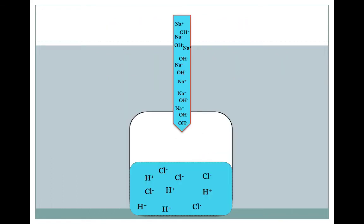Let's look at this on a particle level. Here again we have NaOH in our burette, so Na⁺ ions and OH⁻ ions. Remember, this is an aqueous solution, so those ions will have dissociated. In the beaker we have unknown HCl. Here you can see and count how many H⁺ and Cl⁻ ions there are, but in real life we wouldn't be able to see these ions and simply count them — if we could, there'd be no need to do a titration at all.